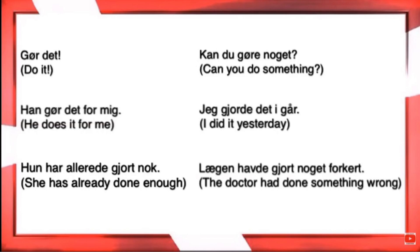'Hun har allerede gjort nok' — she has already done enough. This could be different situations: maybe she's already helped enough, or maybe it's sarcastic — she messed up everything. Whatever the case, it is something she's already done, and it wasn't a long time ago — it's relating to the present. We don't use the present perfect about the past the way you would in English. We use it a lot more in Danish — for example, in Danish you'd say 'jeg har lige set' (I have just watched) rather than 'I watched.'